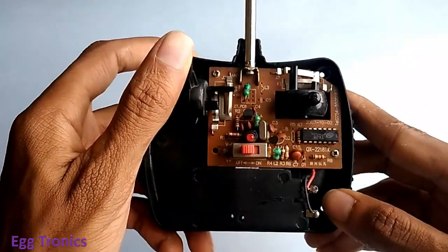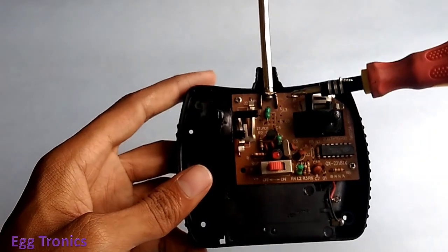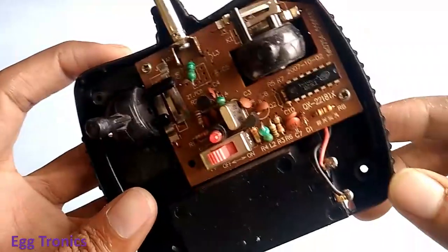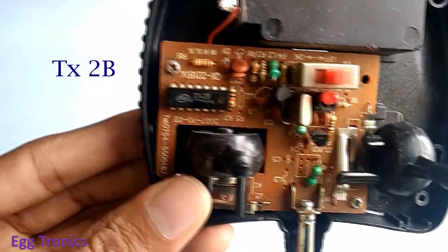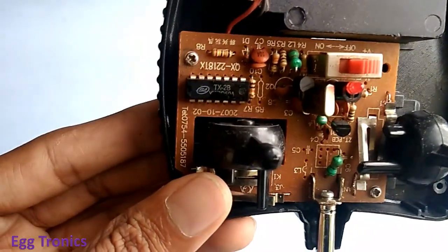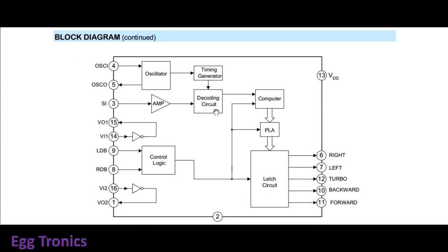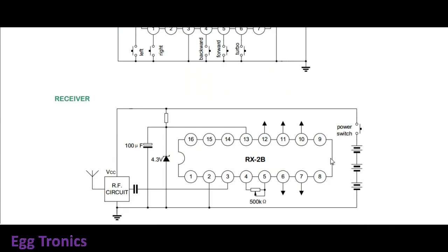Upon pushing the strip onto the PCB, the transmitter will send out an encoded signal to the receiver which is done by this IC, which is TX2B which comes with its pair RX2B which will be inside the car. Upon downloading and studying the datasheet, I noticed there are 5 separate pins which when connected to ground will send the encoded signal to the receiver.